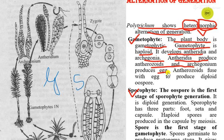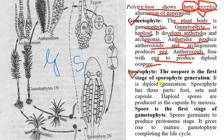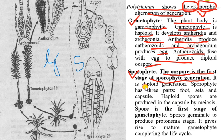There will be fertilization between the antherozoids and the egg to produce a diploid structure known as oospore. As the oospore or zygote is formed, the gametophytic phase ends and the sporophytic phase begins. So the oospore or zygote is the first stage of sporophytic generation. Since the oospore is diploid, the sporophytic generation is a diploid generation.